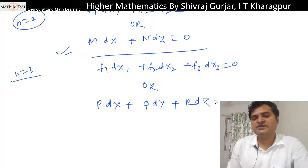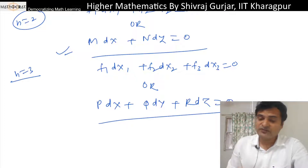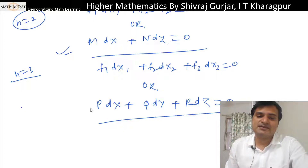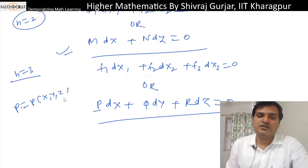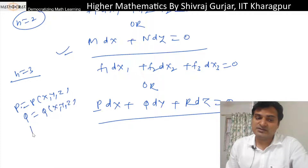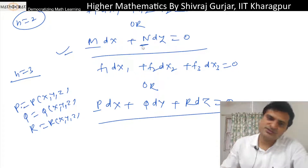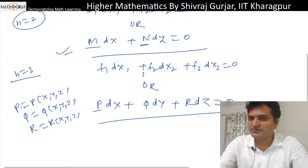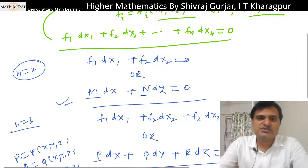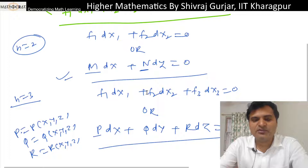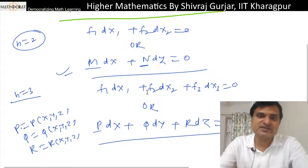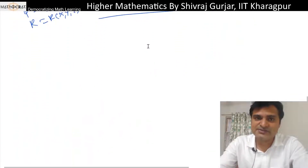This is a Pfaffian equation in three variables, written as P dx + Q dy + R dz = 0, where x, y, z are the variables. Here P, Q, and R are functions of x, y, and z. Similarly, in the two-variable form, M is a function of x and y, and N is also a function of x and y. These are the special forms of the Pfaffian equations.